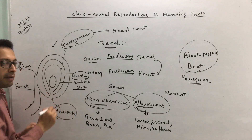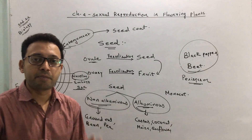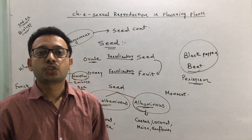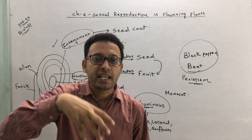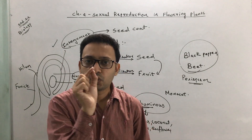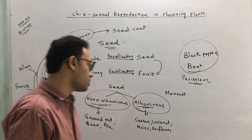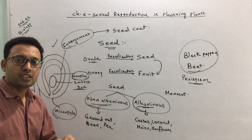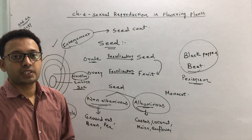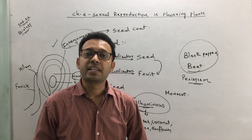The micropyle is a small pore usually found at the apex of the ovule. This small pore remains as such while the seed develops. Through this micropyle, water and oxygen enter the seed when it is sown. This entry of water and oxygen through the micropyle helps in the germination of the seed. That is how various parts of the ovule get converted into various parts of the seed after fertilization.